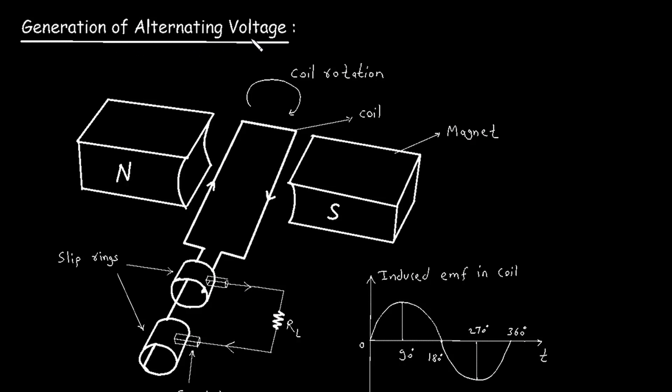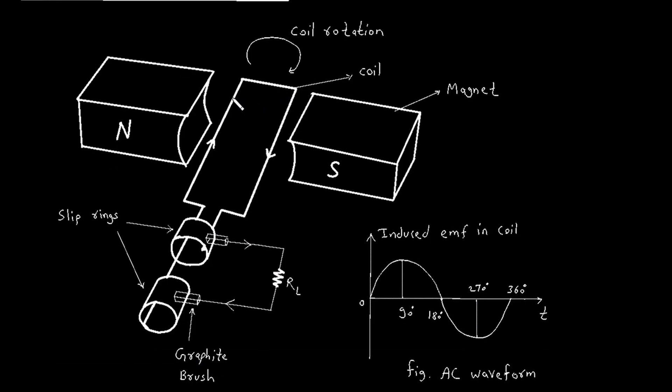Generation of alternating voltage. Here we can see, this is a single loop or single turn alternator. This is called an alternator because it generates alternating current.